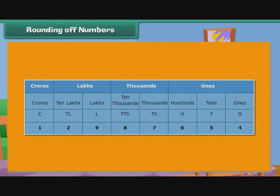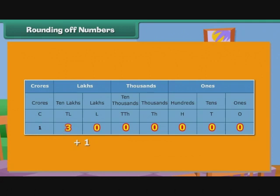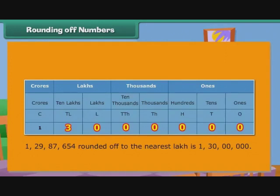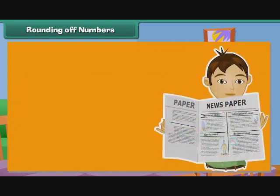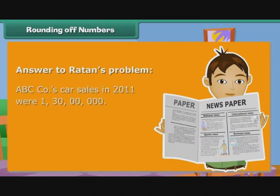We now round off 12987654 to the nearest 10000. We consider the figure at the ten thousands place — it is 8. Since 8 is greater than 5, we replace it and the digits following it with 0, and increase the digit at the hundred thousands place by 1. 12987654 rounded off to the nearest 10000 is 12990000. Here is the answer to Ratan's problem: ABC Company's car sales in 2011 were 1 crore 30 lakhs.